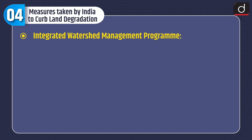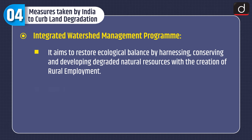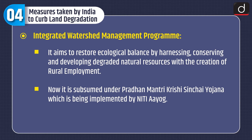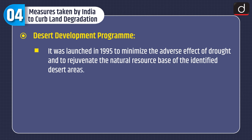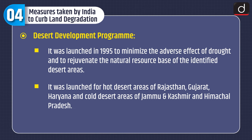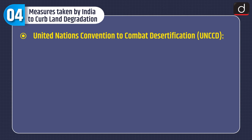Now let's discuss the measures taken by India to curb land degradation. First is the Integrated Watershed Management Programme, which aims to restore ecological balance by harnessing, conserving, and developing degraded natural resources with the creation of rural employment. It is now subsumed under Pradhan Mantri Krishi Sinchai Yojana, implemented by NITI Aayog. Second is the Desert Development Programme, launched in 1995 to minimize the adverse effects of drought and regenerate the natural resource base of identified desert areas, covering hot desert areas of Rajasthan, Gujarat, and Haryana, and cold desert areas of Jammu & Kashmir and Himachal Pradesh.